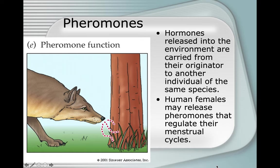We know that animals communicate by pheromones. If you've ever had a dog or cat in heat, you know that male dogs from all over the neighborhood all of a sudden show up to try to breed with your female dog or cat. It's really kind of interesting how pheromones communicate. Most other animals have pheromones. The question is, do humans?